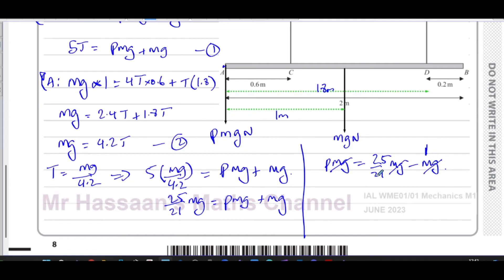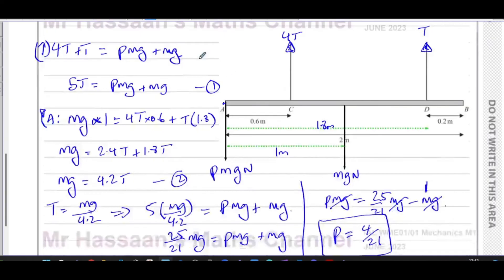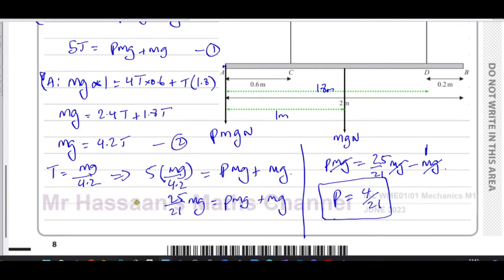So that's 25 over 21 minus 21 over 21, which is 4 over 21. So P is equal to 4 over 21. And there's the answer to part A of the question. We found the exact value of P.